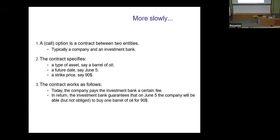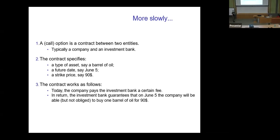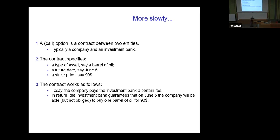First of all, an option is a contract. Whenever you have a contract, you have two parties agreeing on something. Typically for an option, you can think of one party being a company and another being a bank. In this example, the company would be the buyer of the option and the bank would be the seller. The contract specifies the following information: a type of asset — let's assume a barrel of oil, but it can really be anything that can be traded: oil, stocks, gold, magic cards, anything at all.